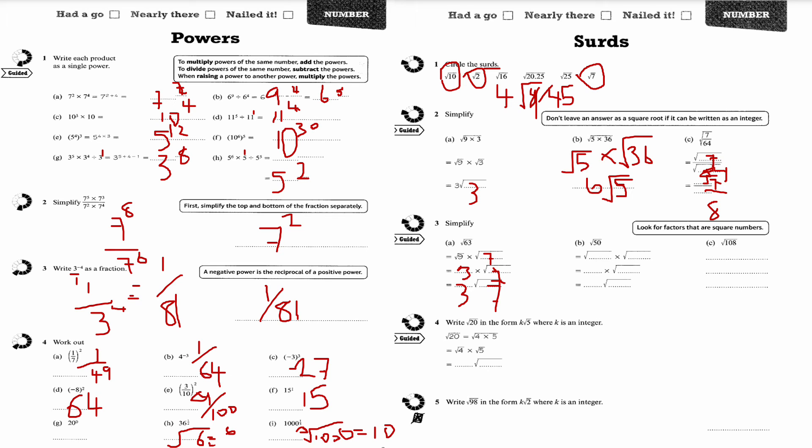Root 50 is root 25 times root 2. Root 25 is 5, so the answer just simplifies to 5 times root 2, which is 5 root 2.